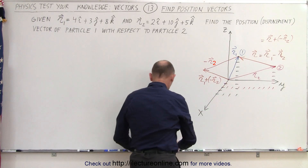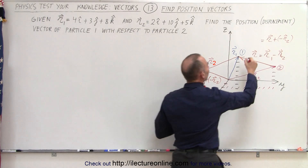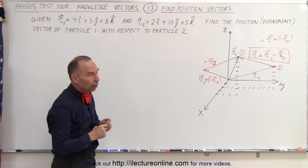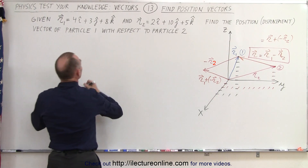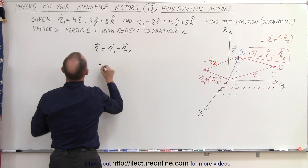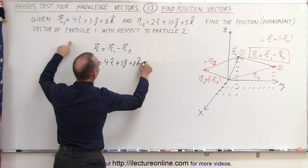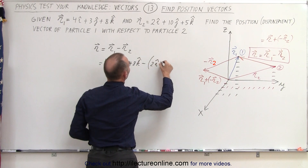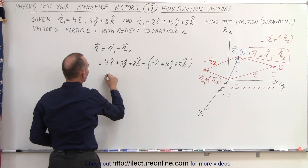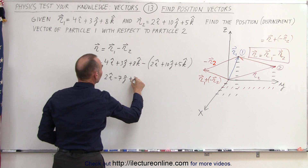Therefore, vector R, which is the position of particle 1 with respect to particle 2, is simply equal to R1 minus R2. So we have vector R equals vector R1 minus vector R2, which is (4i + 3j + 8k) minus (2i + 10j + 5k). That gives us 4 minus 2 = 2i, 3 minus 10 = −7j, and 8 minus 5 = +3k.